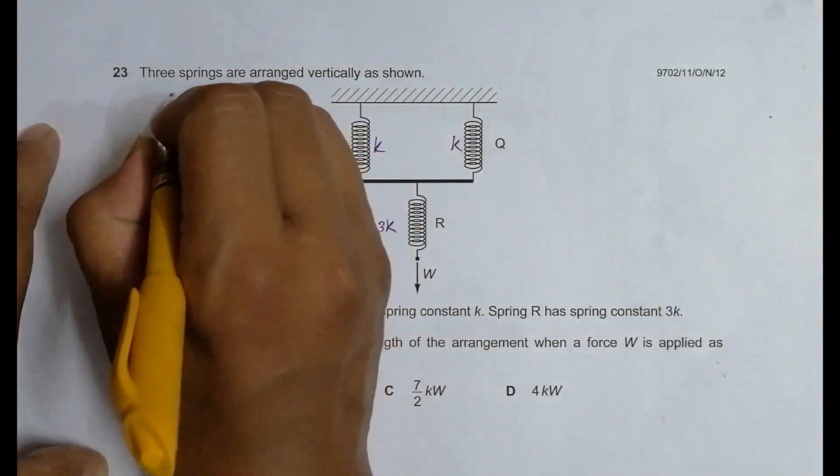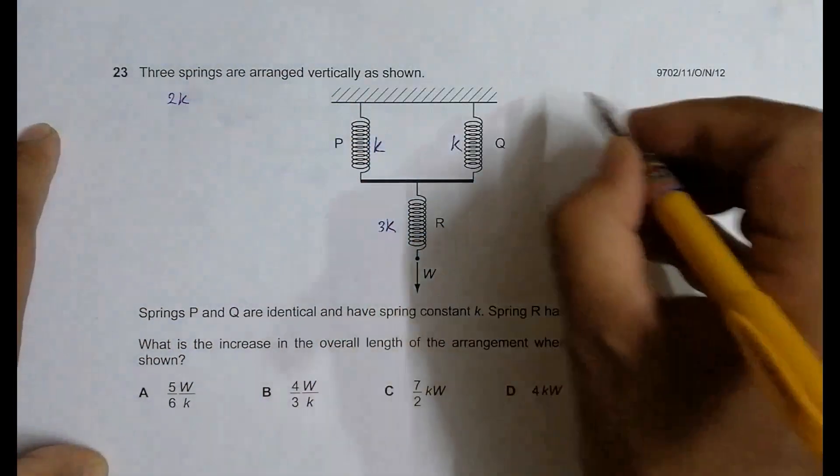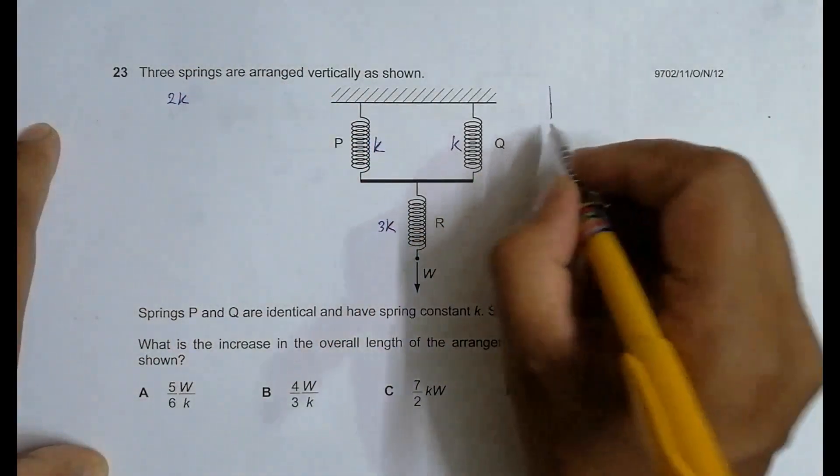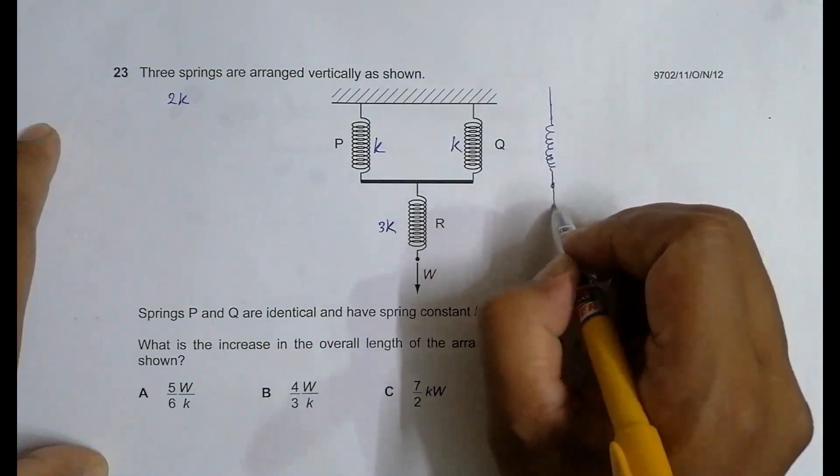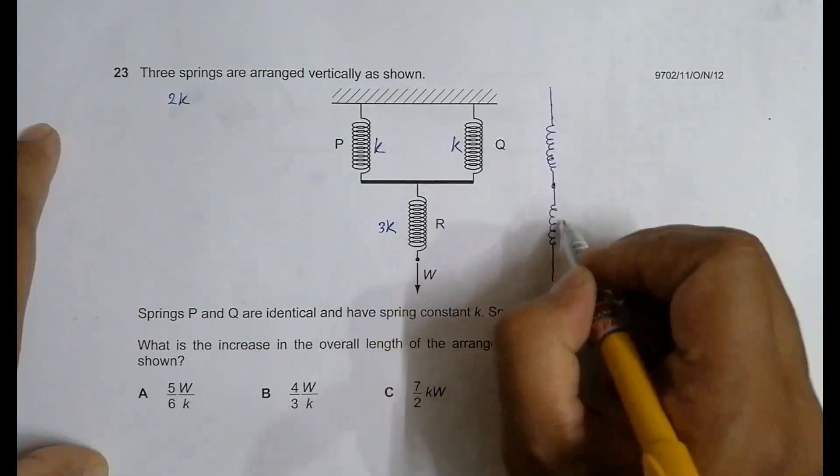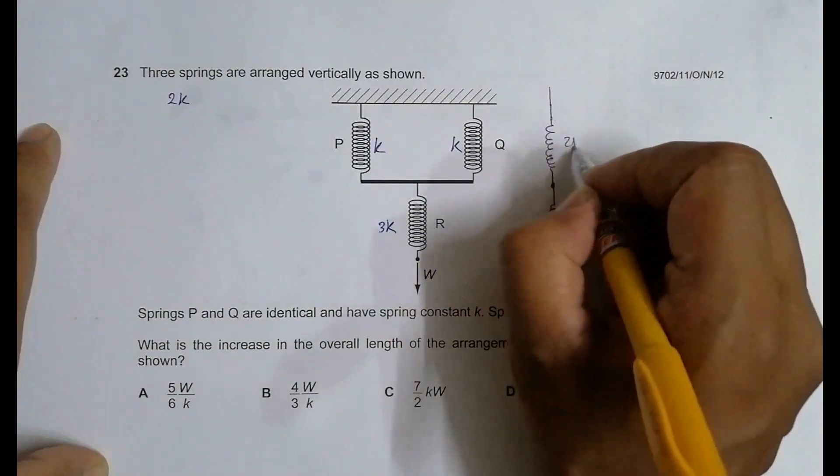So the combination of K and K is equal to 2K. So now the spring acts as a combination of this spring with a spring constant 2K and then this spring offers spring constant 3K. So it is 3K, it is 2K.